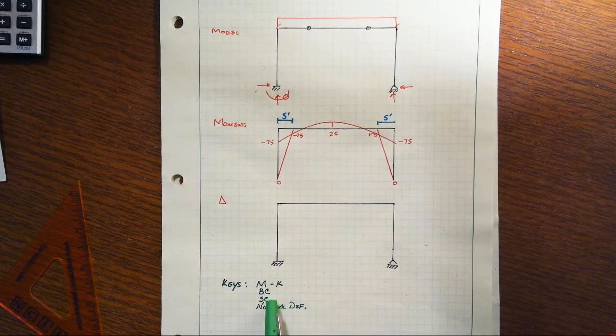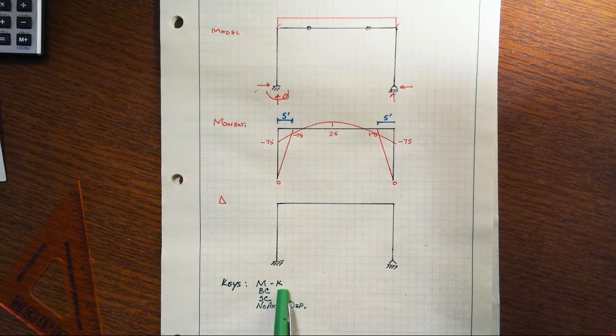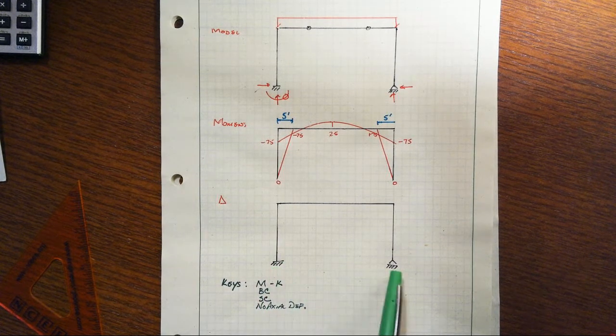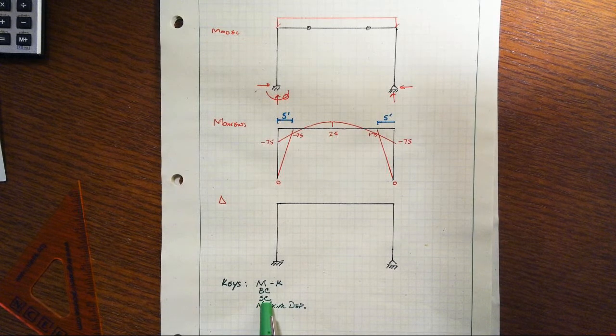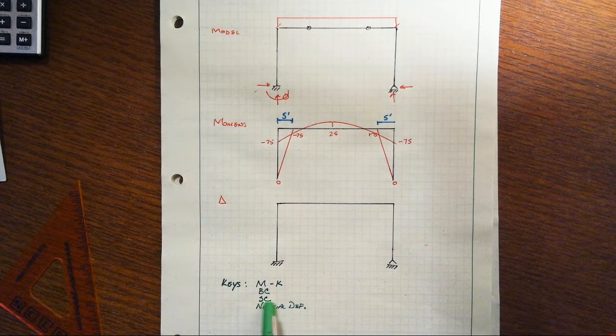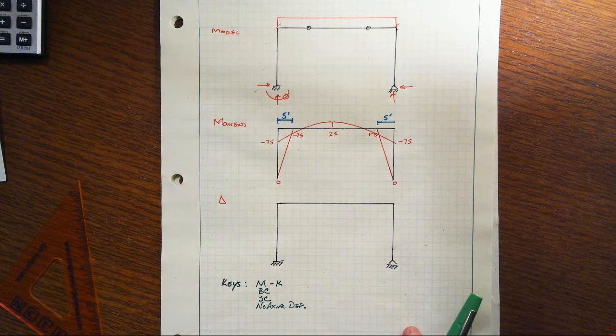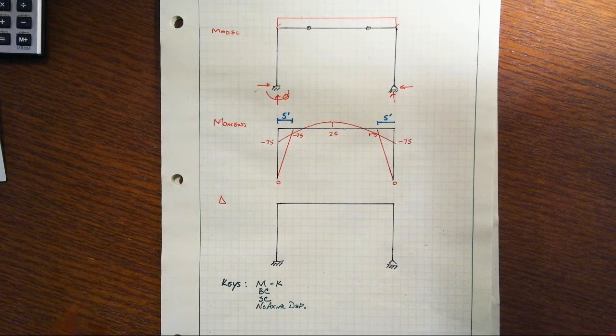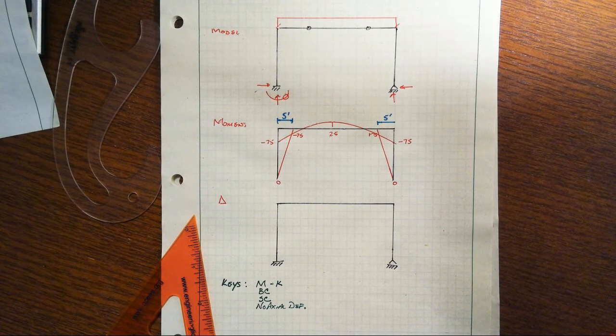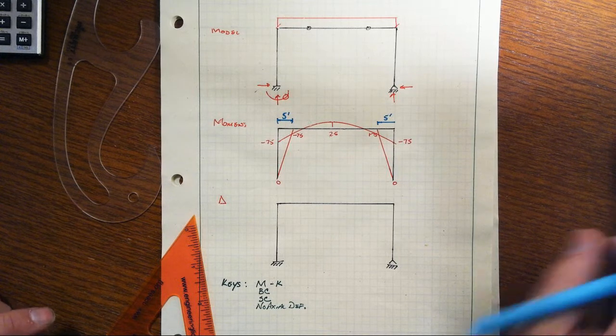Remember, four keys here. We need to comply with moment curvature requirements, smiley face, frowny face, positive, negative moment. We have to comply with boundary conditions, what happens here at the supports. We have to comply with special conditions and more generally continuity as those aspects develop. And then we're going to assume that axial deformations of individual members are negligible. They're certainly of a much smaller order than flexural deformations are.